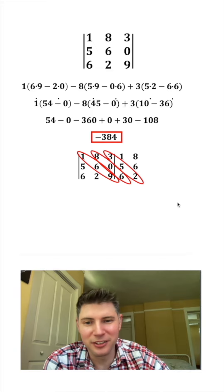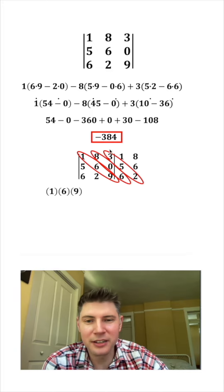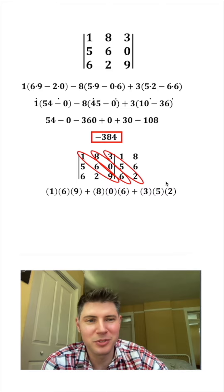Then you find these three diagonals. You do one times six times nine, plus eight times zero times six, plus three times five times two.